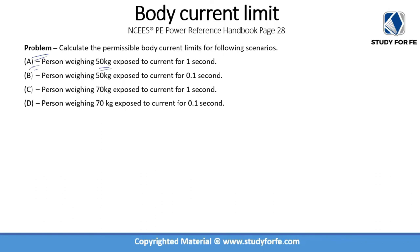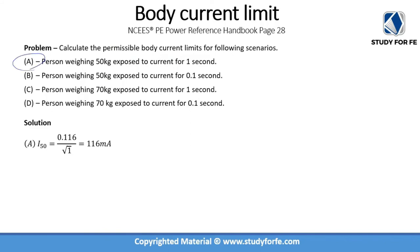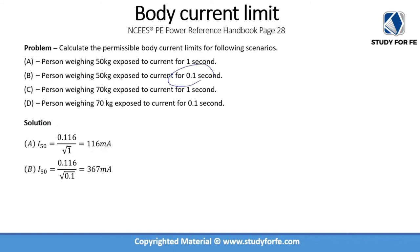For scenario A — a 50 kg person exposed for 1 second — we use the formula with 0.116 in the numerator divided by the square root of time. With time equal to 1 second, the maximum allowable current is 116 milliamps. For scenario B, the same 50 kg person exposed for only 0.1 second, the shorter duration means a higher amount of current can potentially pass through without severely injuring them.